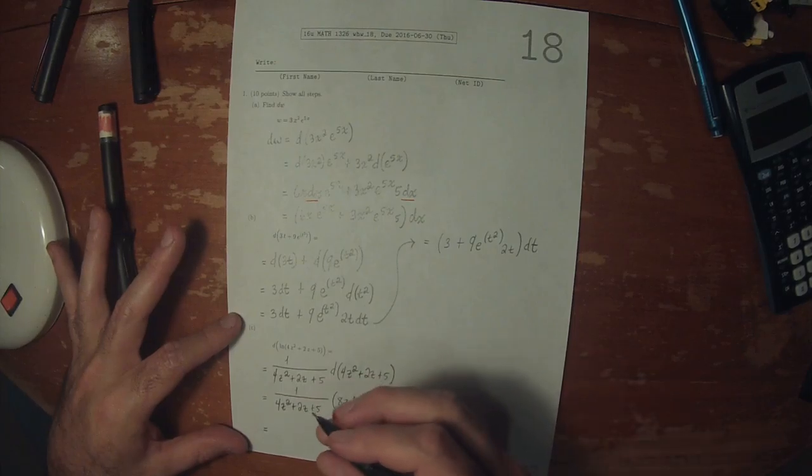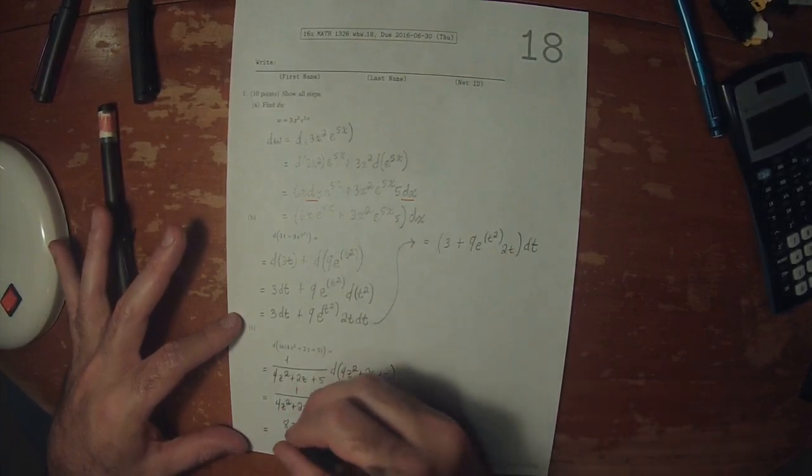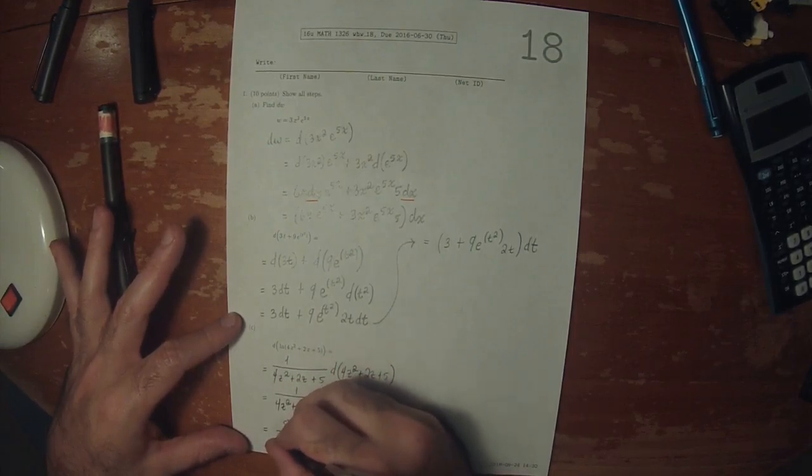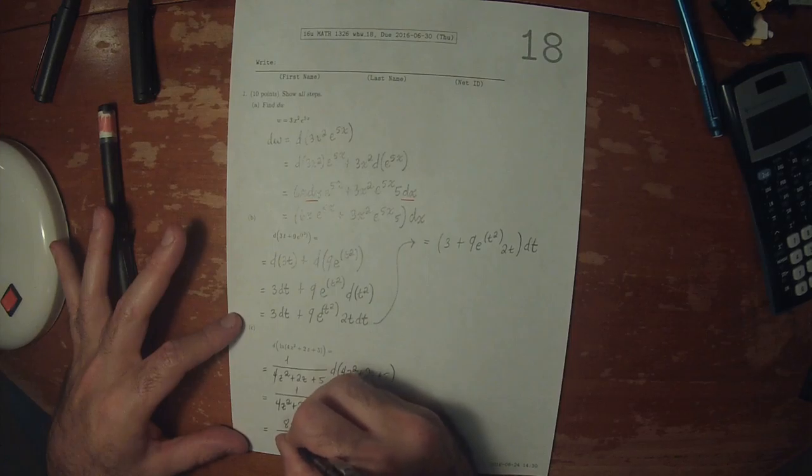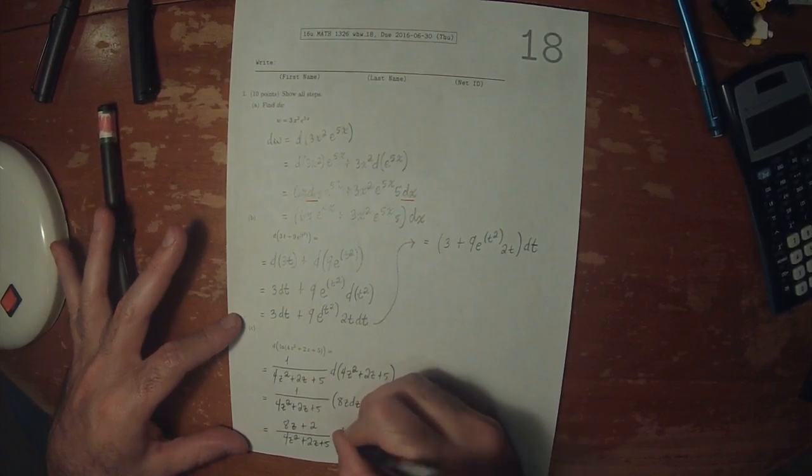This could be algebraically simplified somewhat into 8z plus 2 divided by 4z squared plus 2z plus 5 dz.